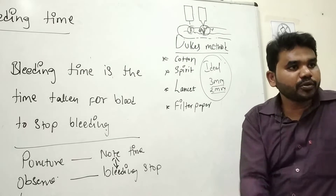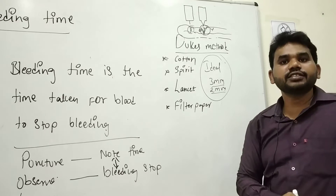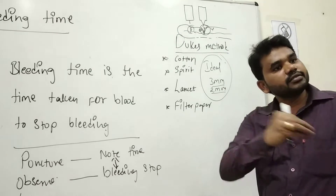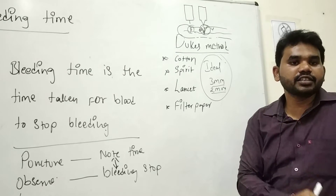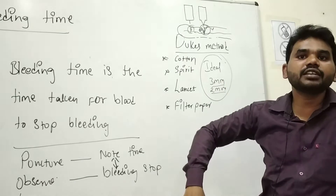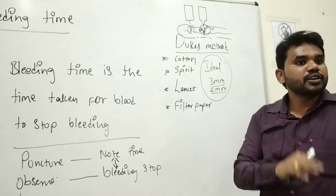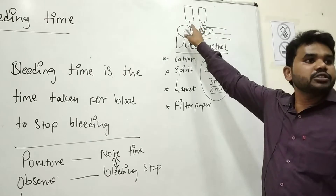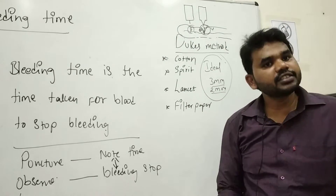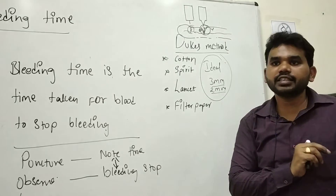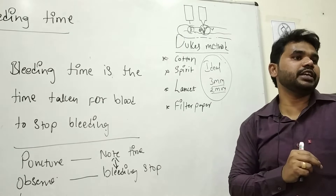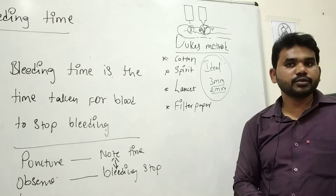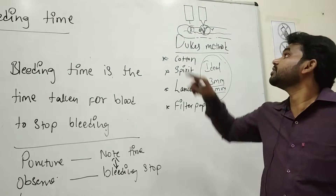So always you have to make an ideal puncture. If you perform the bleeding time using this plastic lancet, the blood will not come outside and you will report it as normal — bleeding time less than 30 seconds. If a doctor has to do an operation and the technician has given a report of less than 30 seconds, the doctor will take the person to surgery. When he cuts for the operation the blood will not stop, because the patient has a bleeding disorder and you have not done the test properly. Whose mistake is this?